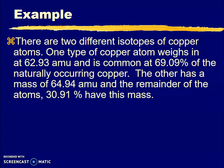The other has a mass of 64.94 amu, and the remainder of the atoms, 30.91%, have this mass. To set up this equation, make sure you keep the mass and the percent that goes with one isotope together. Don't mix and mingle.